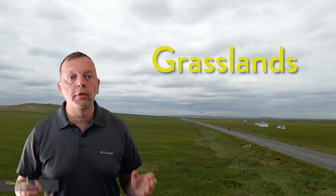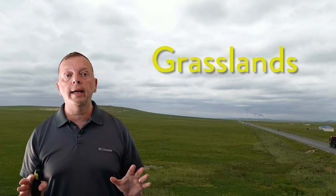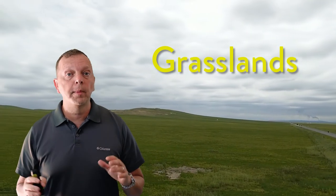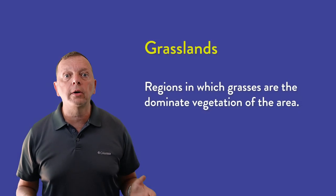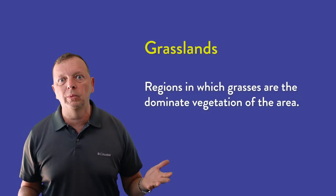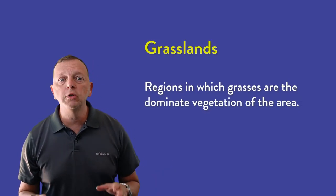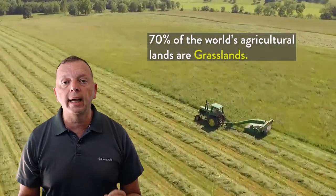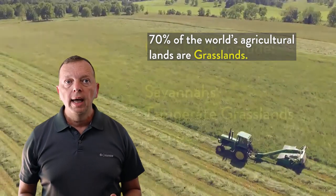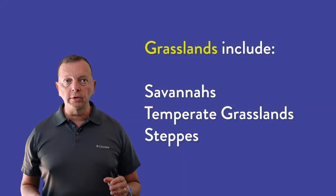While forests cover nearly a third of the Earth's land area, nearly 40% of the land area is covered by grasslands. From their name, we realize that grasslands are areas dominated by grasses. These grasslands are incredibly important because most of the world's agriculture comes from grasslands — in fact, 70% of the world's agricultural lands are actually grasslands. Just like forests, there are several different types of grasslands.